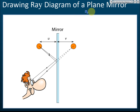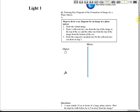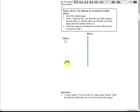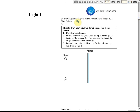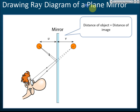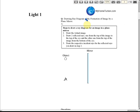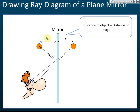Now let's look at drawing a ray diagram of a plane mirror. In the exam, they may give you an object, an observer's eye, and a mirror, and ask you to draw the ray diagram of the image formation. There are a few steps to follow. Step one is to draw the virtual image. We know the distance of the object from the mirror equals the distance of the image from the mirror.